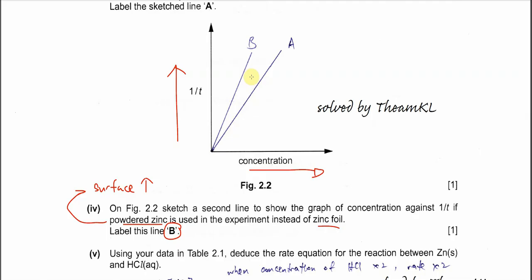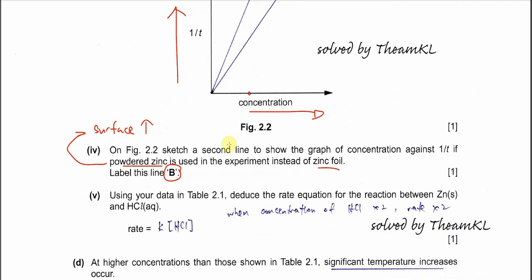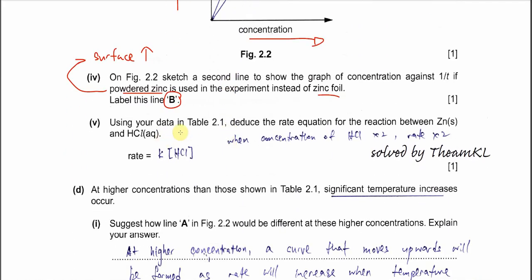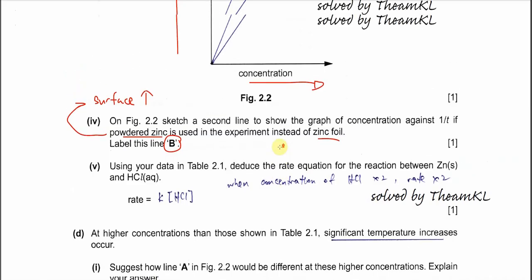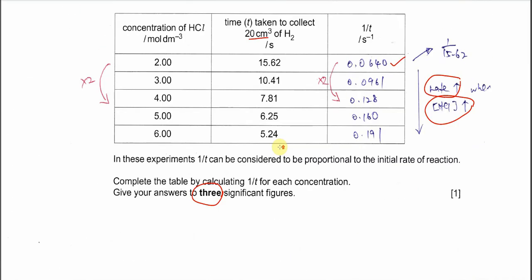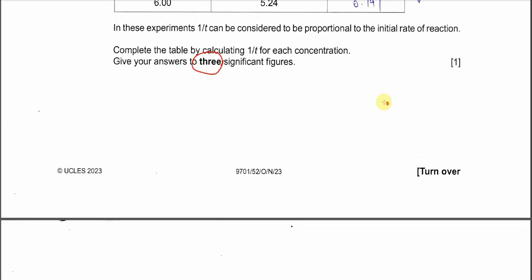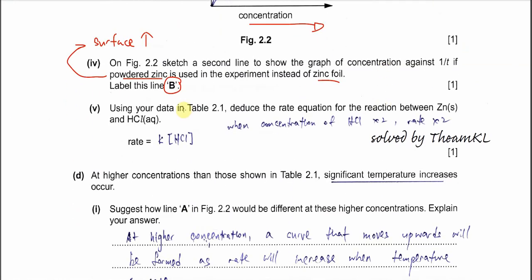Part 5. Using your data in table 2.1, deduce the rate equation for the reaction between zinc and HCl. You need to compare the concentration and rate. Use one example: from 2 to 4, when the concentration doubles, the rate is actually double - 0.064 to 0.128. So we are quite sure that it's first order. Because concentration double, rate is double. The rate equation is therefore: rate = k × [HCl].